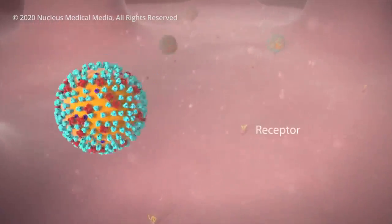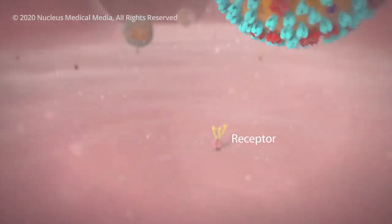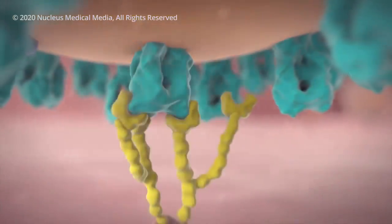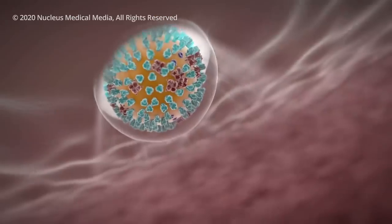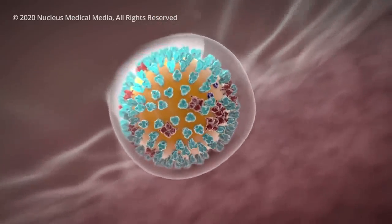One spike on the virus inserts into a receptor molecule on your healthy cell membrane like a key in a lock. This action allows the virus to get inside your cell.